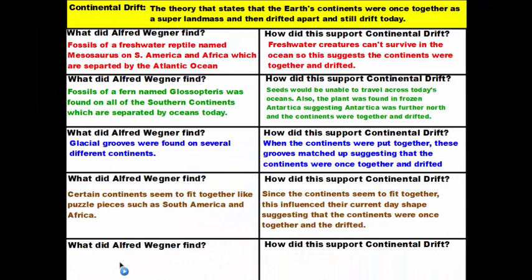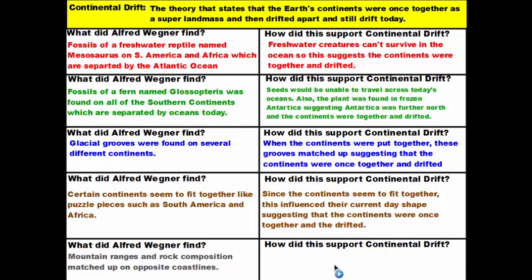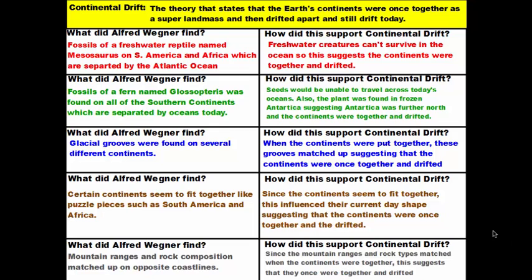Our last pieces of evidence: mountain ranges and rock compositions matched up on opposite coastlines. Since the mountain ranges and rock types matched when the continents were put together, this suggests they were once joined and then drifted apart.